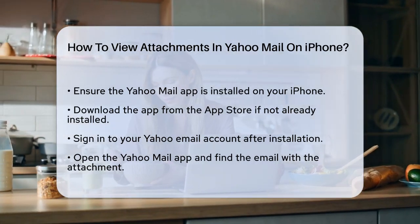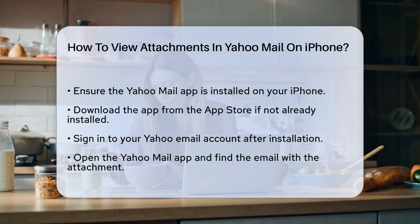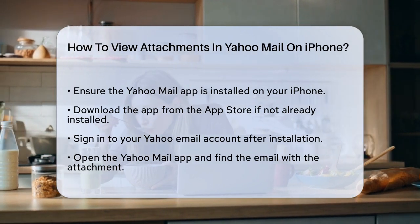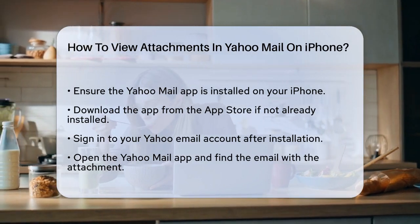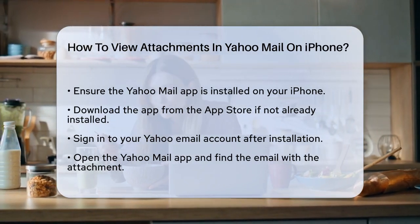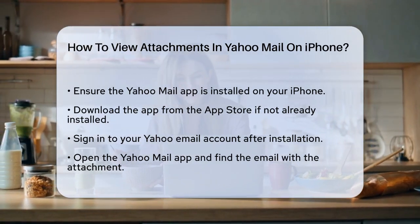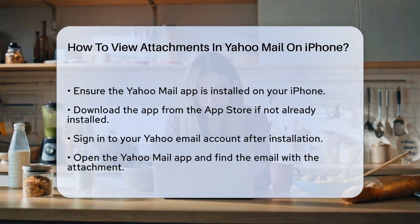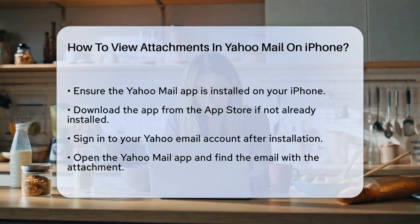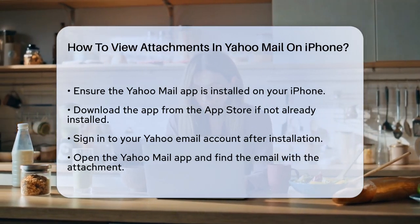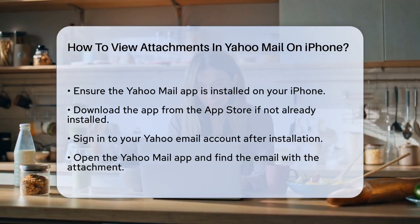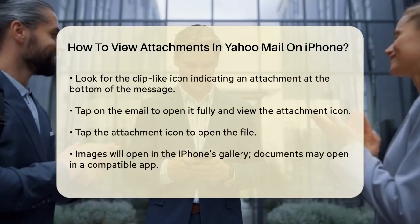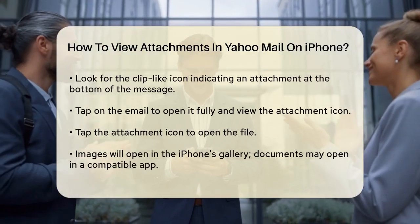Once you're logged in, open the Yahoo Mail app and navigate to the email that contains the attachment you want to view. You'll see a message with an attachment indicated by a clip-like icon at the bottom. To view or download the attachment, tap on the email to open it fully.